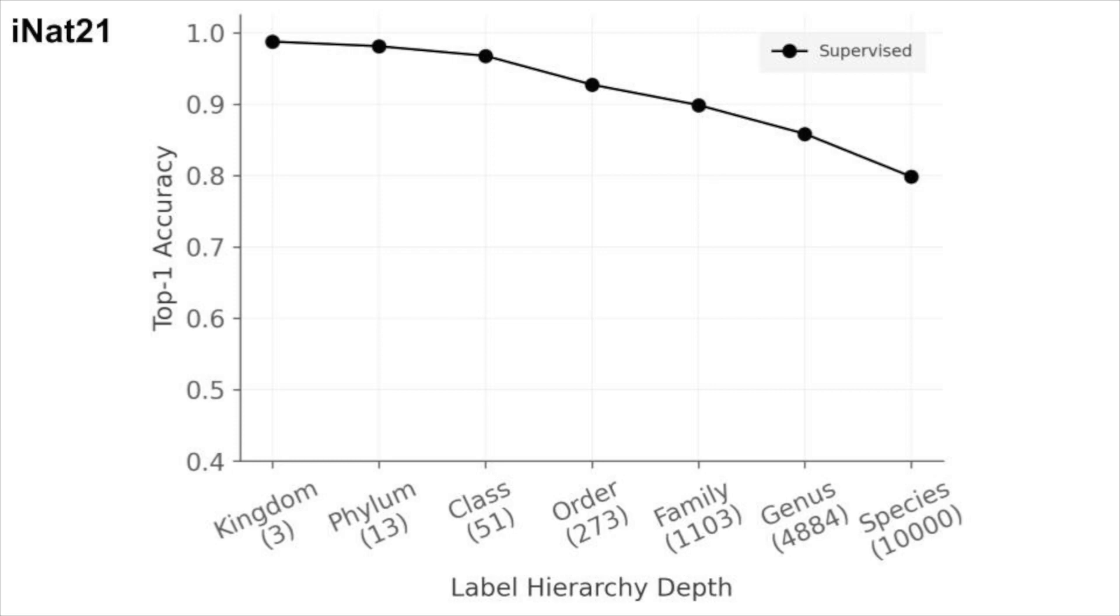Here we show the performance of a fully supervised network trained on iNat21 and evaluated at different levels of granularity. Unsurprisingly, performance increases at coarser levels. After all, it's easier to tell plant versus animal apart than it is to tell two bird species apart. The orange curve shows the performance of a linear classifier trained on top of SimCLR.